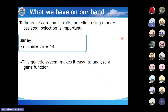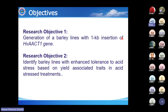If we want to improve any agronomic traits, marker-assisted selection breeding is important. Barley is diploid with 2n equal to 14, which makes it easier to analyze gene function and to introgress the one kilobase pair insertion into barley lines that lack it. Our first objective is the generation of barley lines with the one kilobase pair insertion of the HBS gene. The second objective is identifying lines with enhanced tolerance to acid stress based on yield-associated traits under acidic soil conditions.